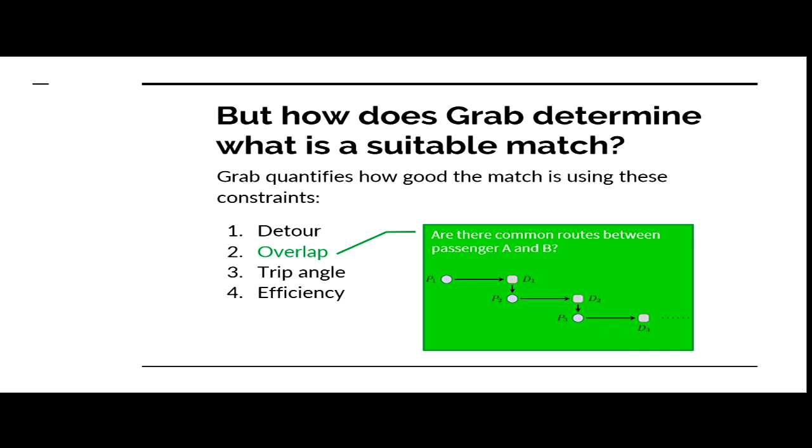This diagram shows the worst-case scenario where there is no overlap. In this case, the first passenger will reach their destination, then they will pick up the second passenger, and the cycle goes on. This shows there is no overlap and would not be a suitable match for GrabShare.